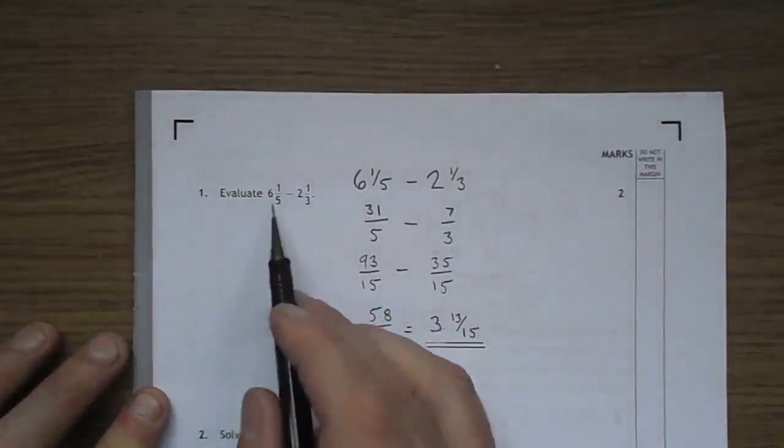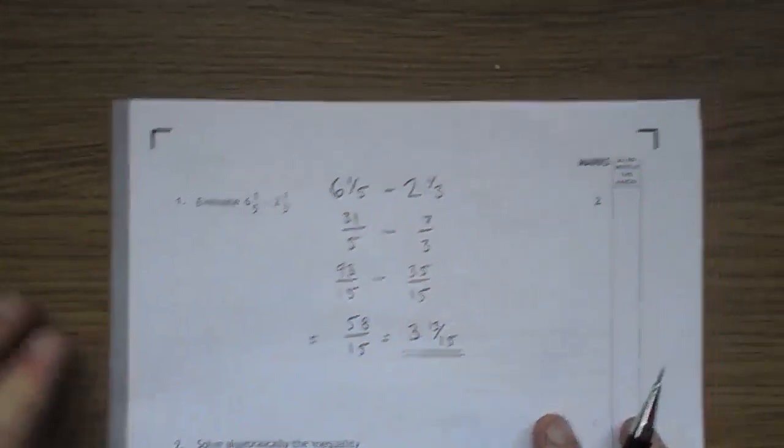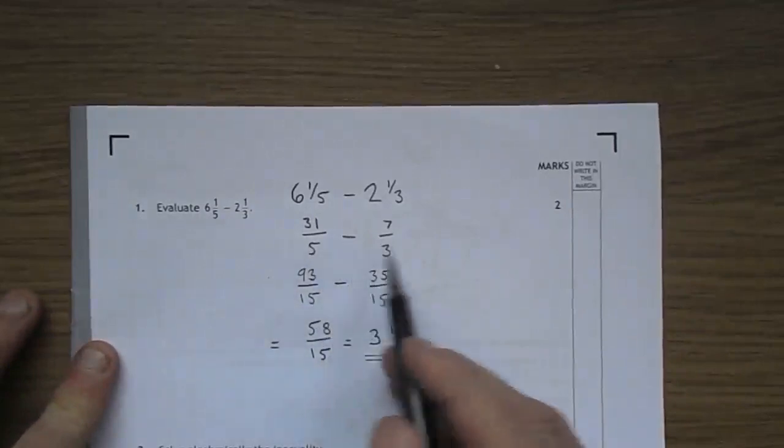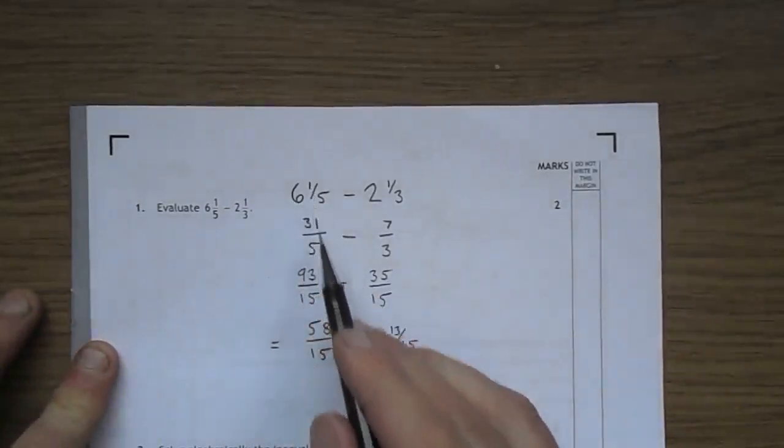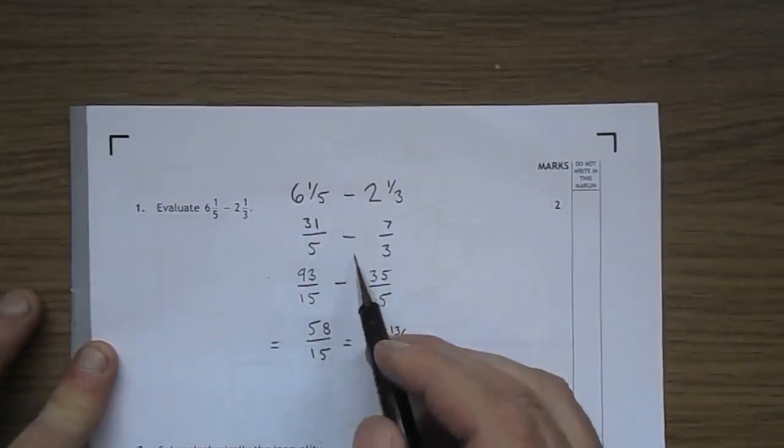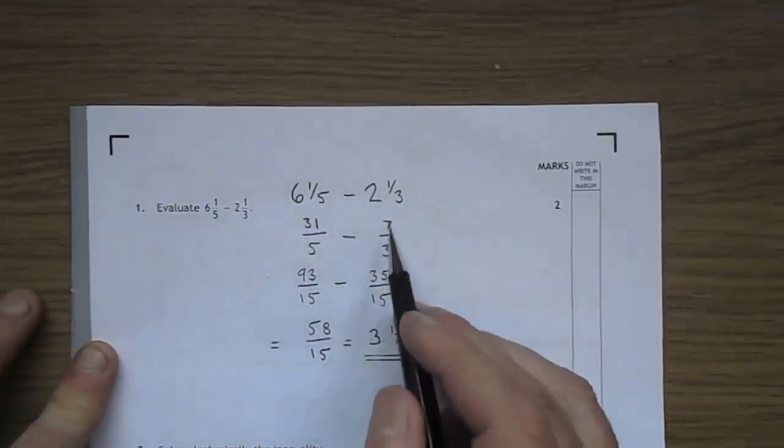Evaluate, work out, six and a fifth take away two and a third. Obviously there are ways to do this. I tend to put them into improper fractions. Five sixes are 30 and one, 31 over five. Take away three twos are six and one, seven thirds.